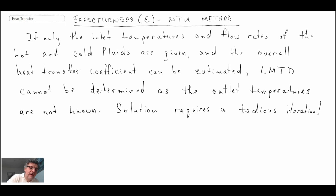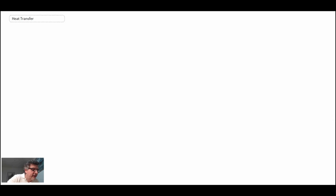Okay, so if we're posed with a problem where we just know the inlet temperatures and the mass flow rates of our two fluid streams, we cannot determine the exit temperatures. And consequently, when applying LMTD or the LMTD method, you cannot evaluate that. And the solution requires a bit of a tedious iteration, as we saw at the end of the last lecture when we were working an example problem that fit this description. So in these cases, we use the effectiveness NTU method.